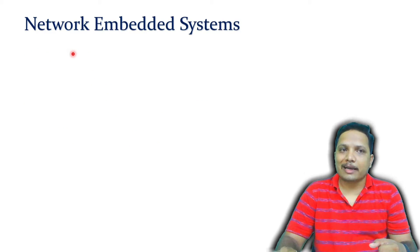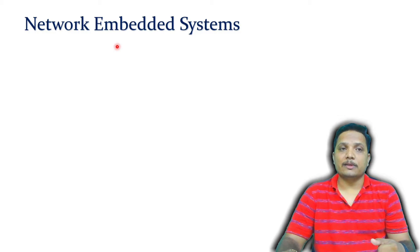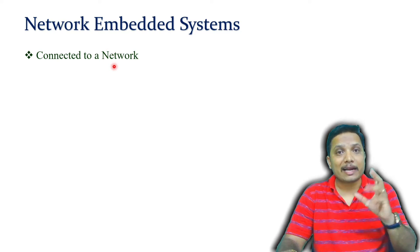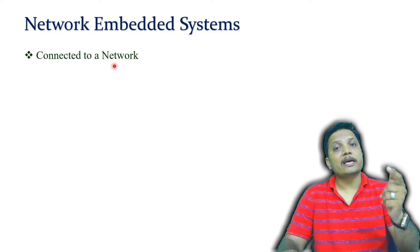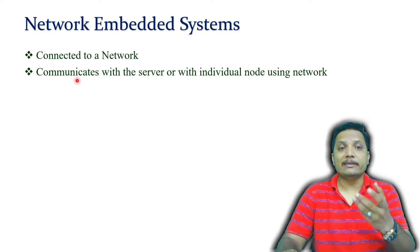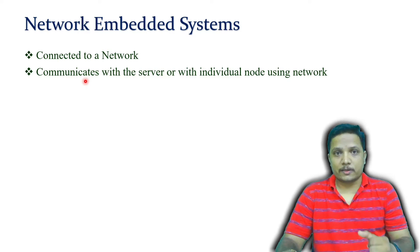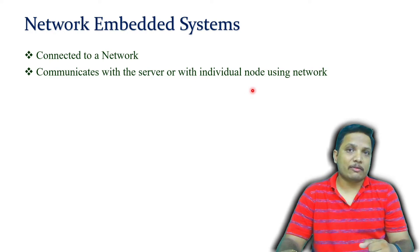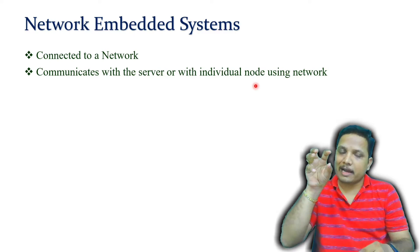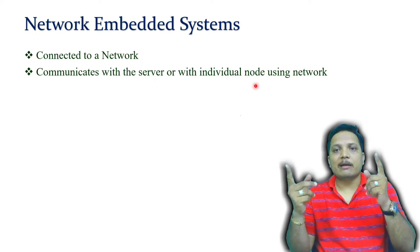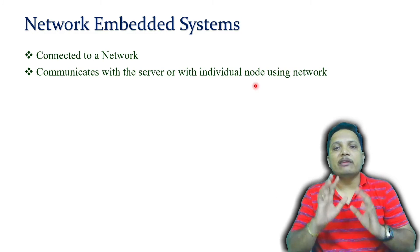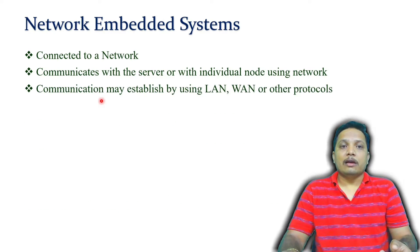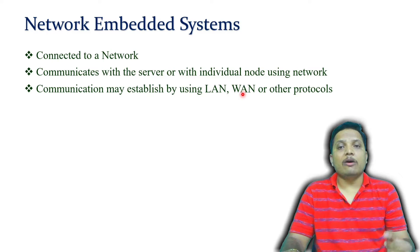A network embedded system is an embedded system connected to a network, where different systems are connected with each other. Communication happens with different nodes — it communicates with a server or individual nodes using a network. For example, in a star network, the server is at the center and all elements communicate to the server, or sometimes two nodes communicate with each other. Communication may happen using LAN, WAN, or other protocols.